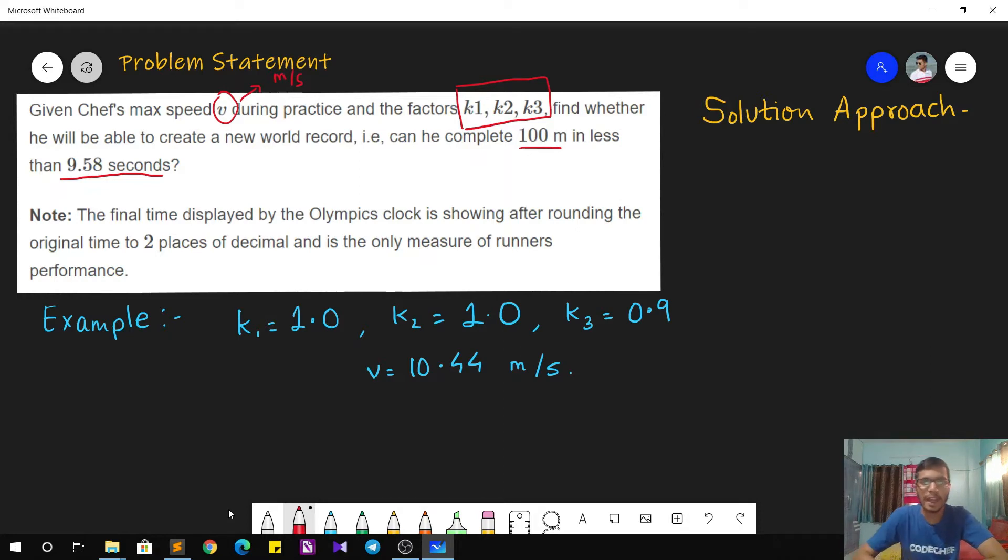So the unit of V given to us will be in meters per second and there will be three factors deciding the speed in the actual race. So for example, if you see a test case over here, there are three factors namely K1, K2 and K3 where K1 is 1, K2 is 1 and K3 is 0.9 and the maximum speed of Chef during the practice is 10.44 meters per second.